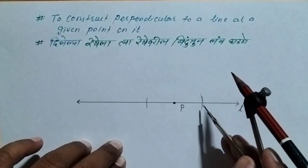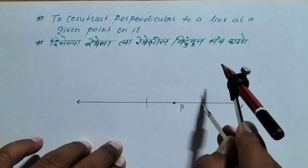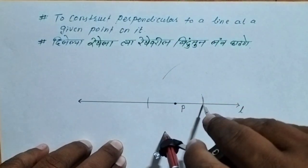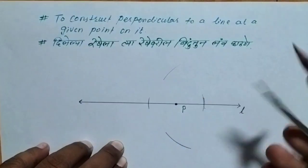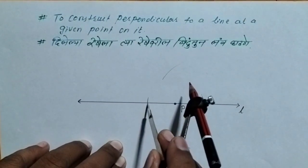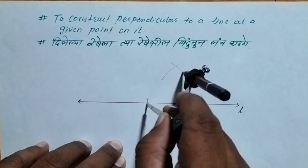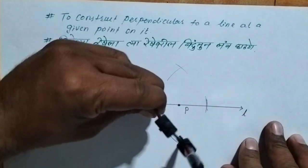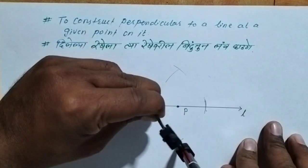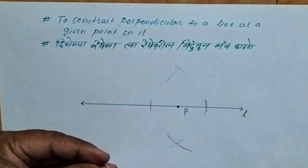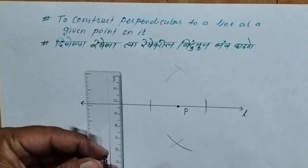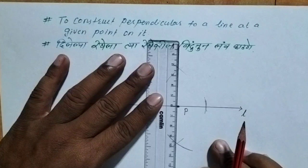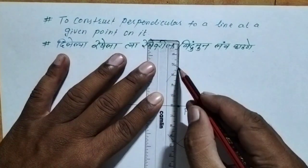Now I am going to place my iron point on the intersecting arc on the right side, then place the iron point on the intersecting arc on the left side, and draw two intersecting arcs above the line. This gives us an intersecting point.